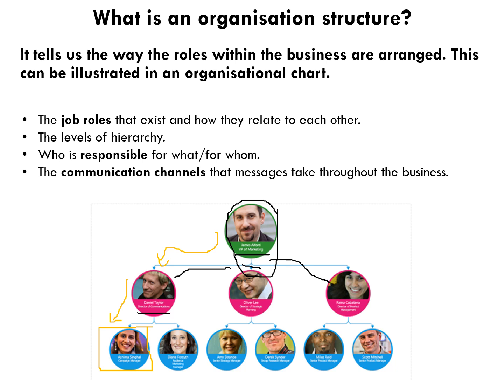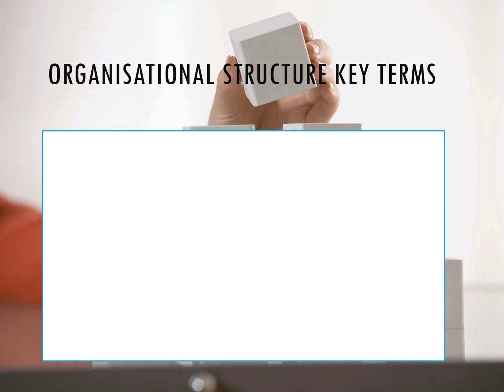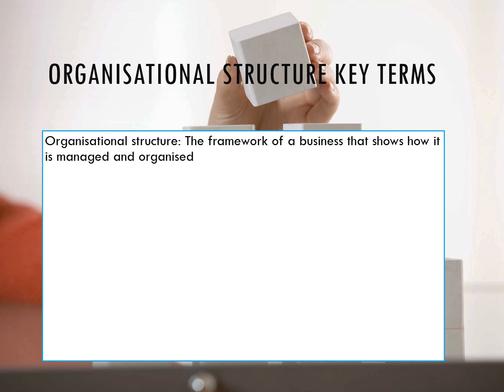This is what we can see from an organizational chart — how the business staff, this is a human resources topic, are going to function and operate. Let's make sure we've got some key terms in our notes. An organizational structure is the framework of a business that shows how it is managed and organized. The first key term is hierarchy — the number of levels in an organizational structure. The previous example had three.